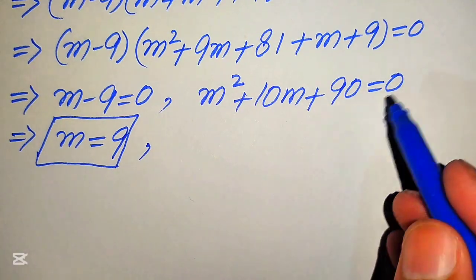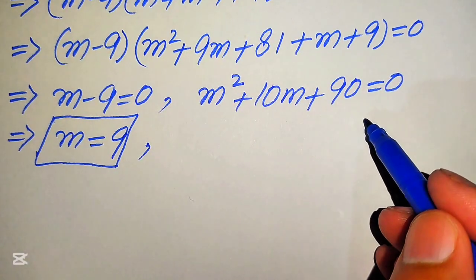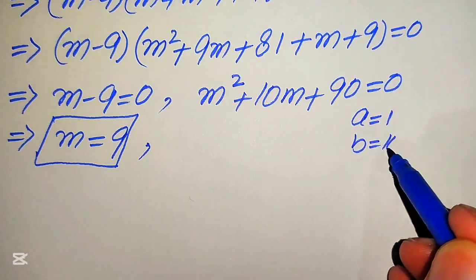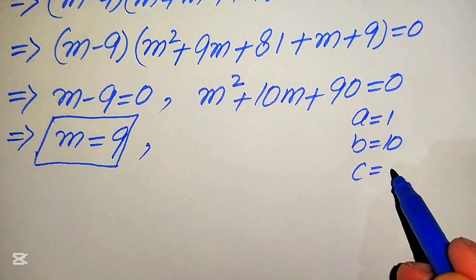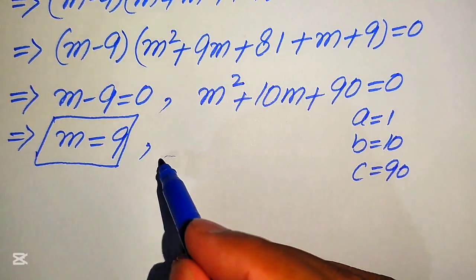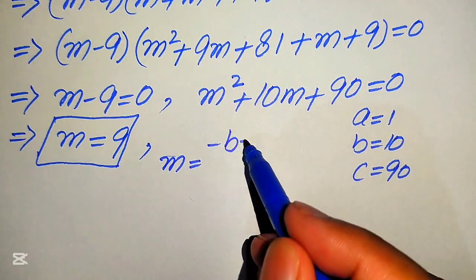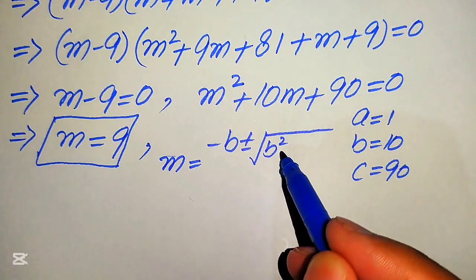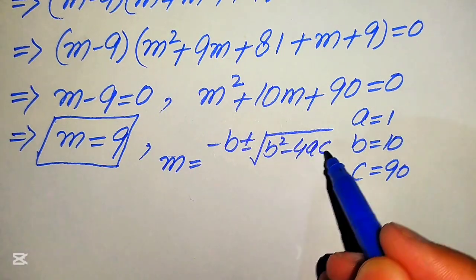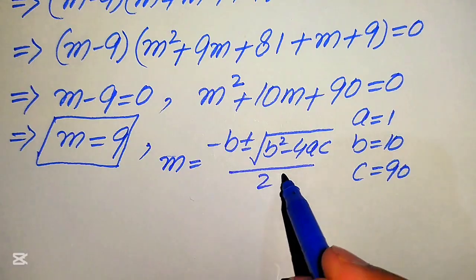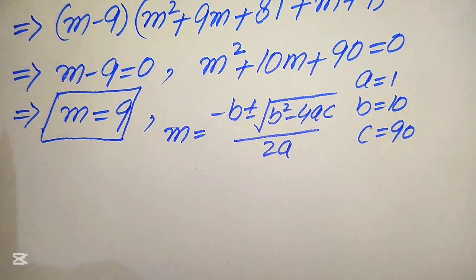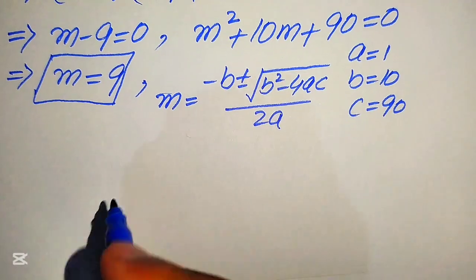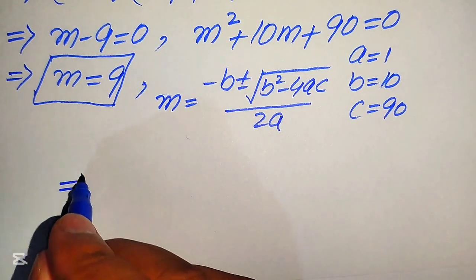To solve the quadratic we write the coefficients: a equals 1, b equals 10, and c equals 90. We state the quadratic formula as m equals negative b plus or minus the square root of b squared minus 4ac, all divided by 2a. Now we substitute the values of a, b, and c to get the other values of m.